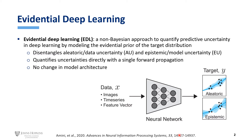Since EDL quantifies uncertainties directly with a single forward propagation, it is much more convenient and efficient than other uncertainty quantification methods, such as Bayesian Deep Learning. As it requires no change in the model architecture, EDL is highly adaptable in many problem settings.